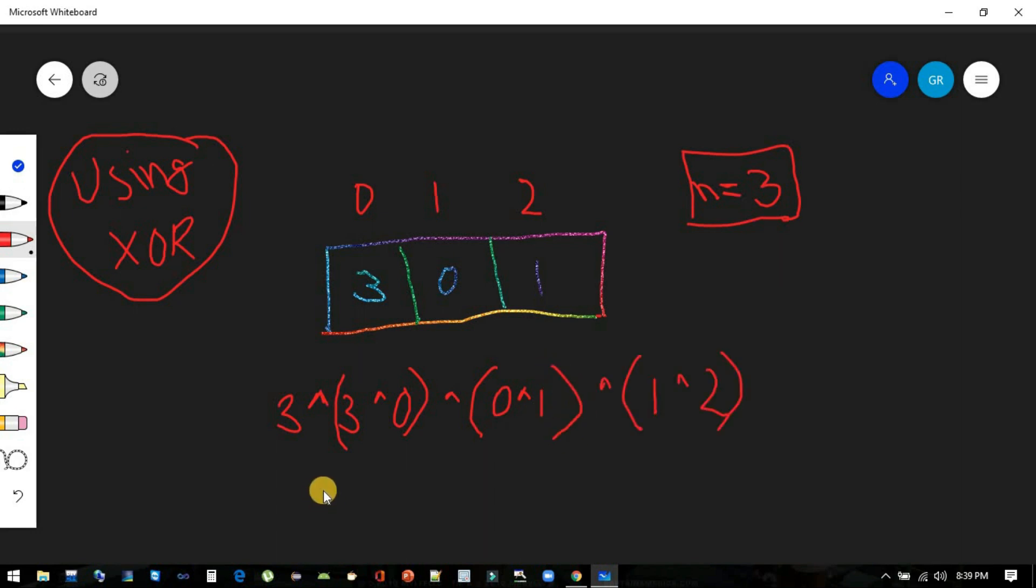All right, so using XOR, the similar elements will get cancelled out. So 3 and 3 will cancel out, 0 and 0 will cancel out, 1 and 1 will cancel out, and this will return 2, which is our answer.